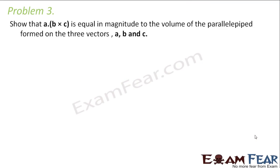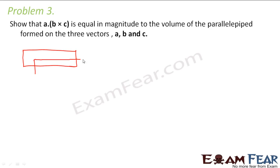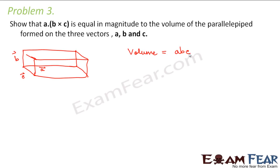Let us look at problem 3. It says: show that A dot B cross C is equal in magnitude to the volume of a parallelepiped formed on the three vectors A, B, and C. Just as a triangle is formed by vectors A and B, a parallelepiped is formed by three vectors A, B, and C. Let us draw a parallelepiped where this is vector B, this is vector A, and this is vector C. The volume would be magnitude of A times magnitude of B times magnitude of C.